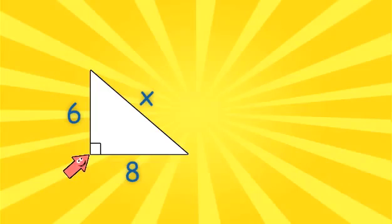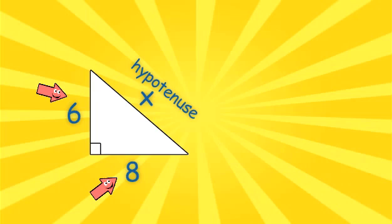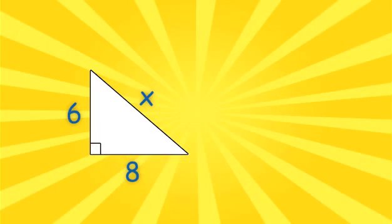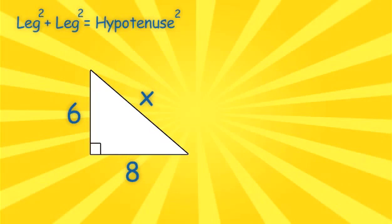The hypotenuse can be located across the 90 degree angle. In this example, X is the hypotenuse. These two sides form the letter L, so these sides must be the legs. Now I can set up my problem using the Pythagorean equation. Leg squared plus leg squared equals hypotenuse squared.